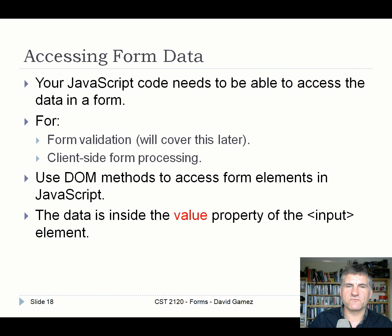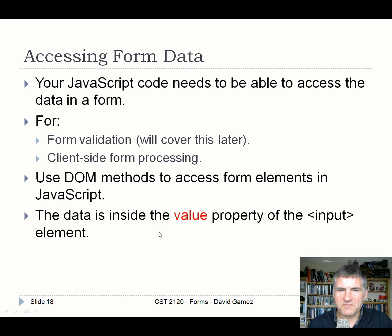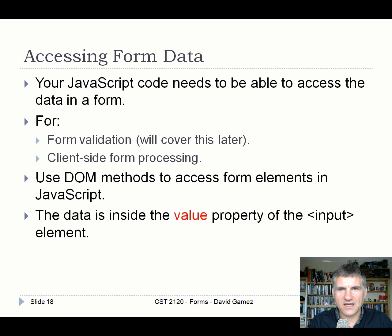The problem with old form processing is that you have to reload the page every time you submit, which can be slow on complicated pages and causes you to lose your place. That's why it's better to use JavaScript to process forms locally. To access form data, we use Document Object Model methods. Importantly, the data is inside the value property of the input element — the input element itself gives you style control and other properties, but the value property contains the actual data.